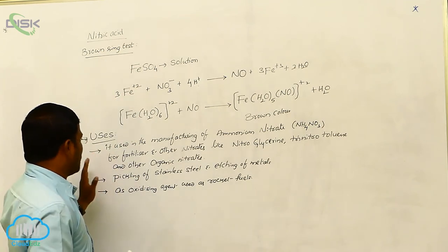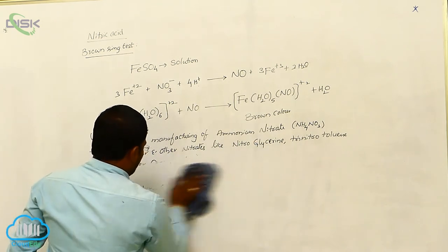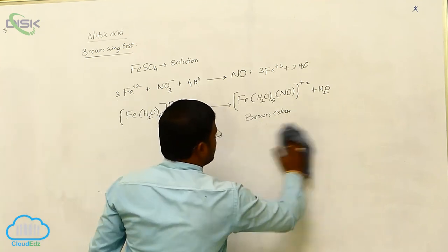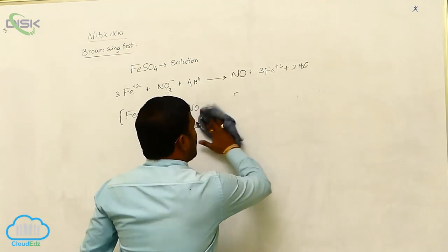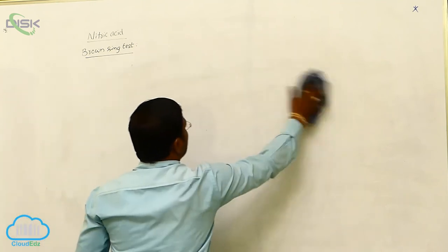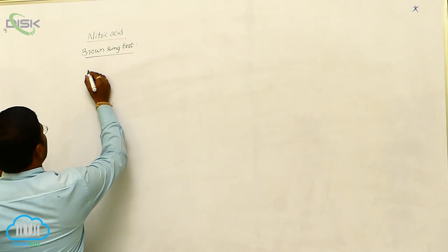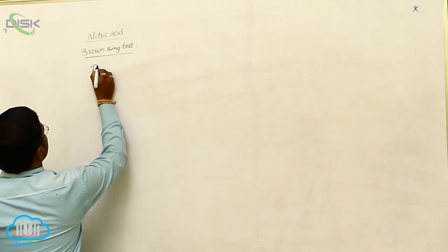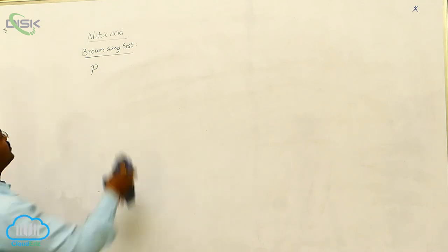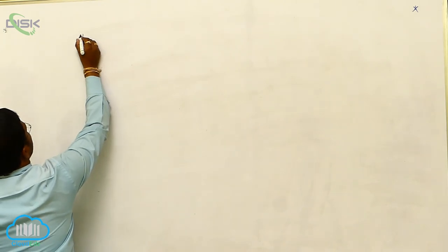So with this, end of discussion regarding nitric acid. The next topic which also comes under 15th group elements is phosphorus. We can write one more with elimination of nitric acid: phosphorus.